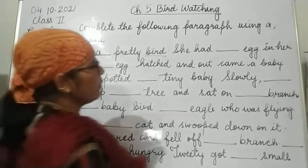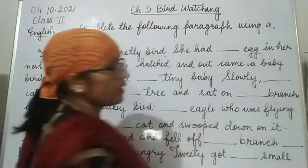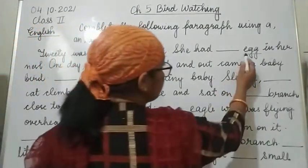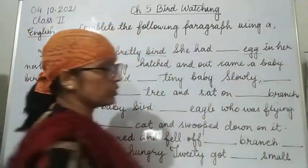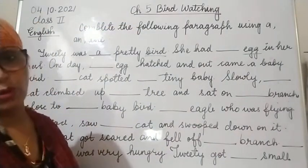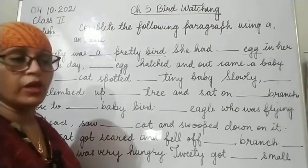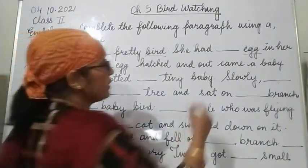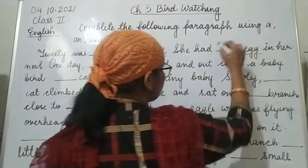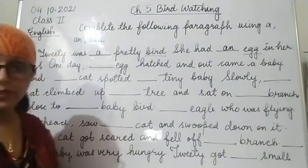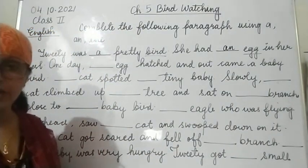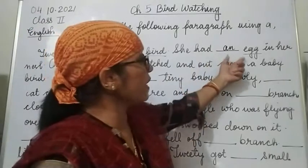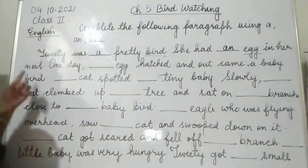She had blank egg. How many eggs? One egg. 'Egg' is one thing, and 'e' is a vowel. Since the noun is singular and starts with a vowel letter, we will write 'an'. So, she had an egg in her nest.